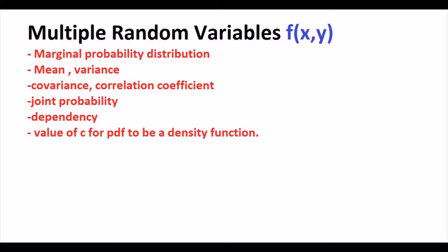Hello everybody. In this video we are going to review multiple random variables. We are going to solve problems to show marginal probability distribution, mean and variance of multiple variables, covariance, correlation coefficient, and joint probability. We are going to prove dependency and we are going to compute the value of C for a PDF to be a density function. Let's begin.